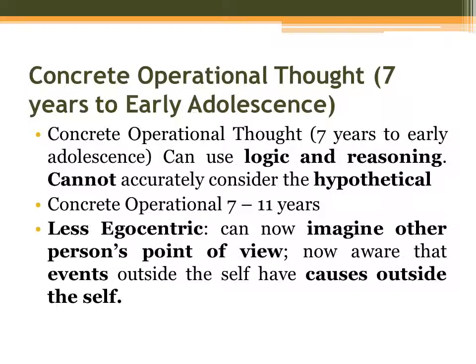Now the concrete operational thought stage — seven years to early adolescence. According to Piaget, during this stage the child starts to use logic and reasoning but cannot accurately consider the hypothetical. The child now becomes less egocentric — they can imagine another person's point of view and are now aware that events outside the self have causes outside the self.